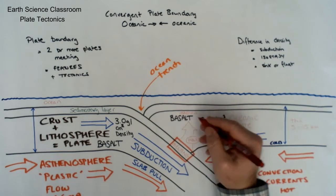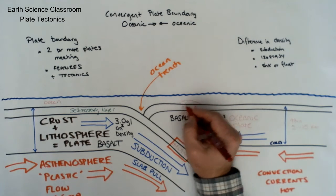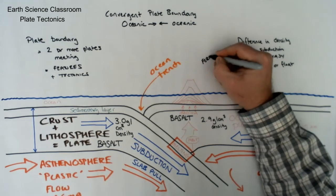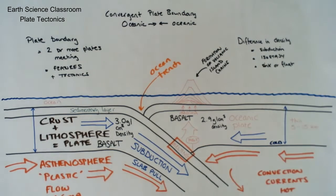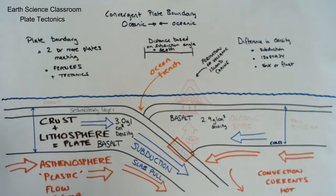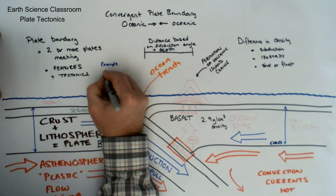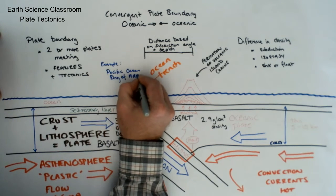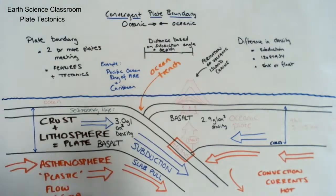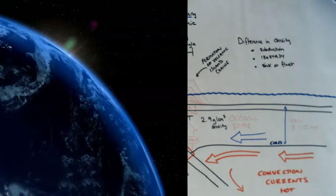This subduction causes melting and decompression melting of basaltic magma, which rises through the lighter plate and creates volcanoes on the ocean floor, eventually creating volcanic islands — a chain of islands parallel to this boundary. It also creates an ocean trench, the deeper part of the ocean where subduction occurs. The distance of the volcanoes from the trench is consistent and parallel along the entire chain. An example would be the Caribbean or the Pacific Ocean islands around the Western Pacific.